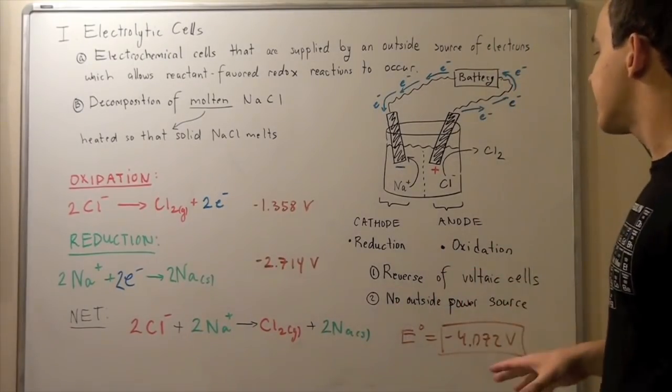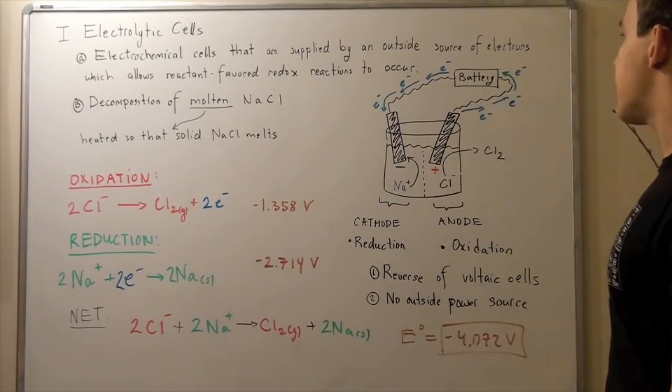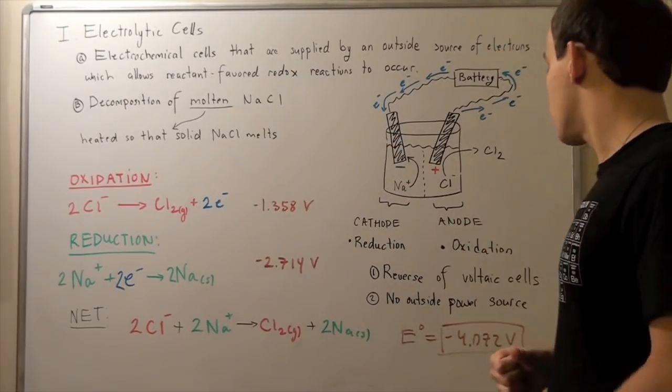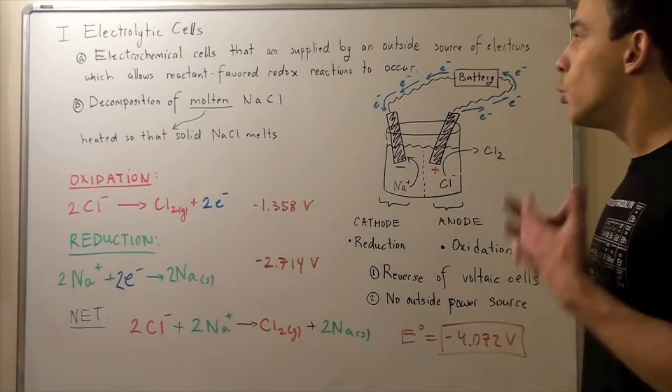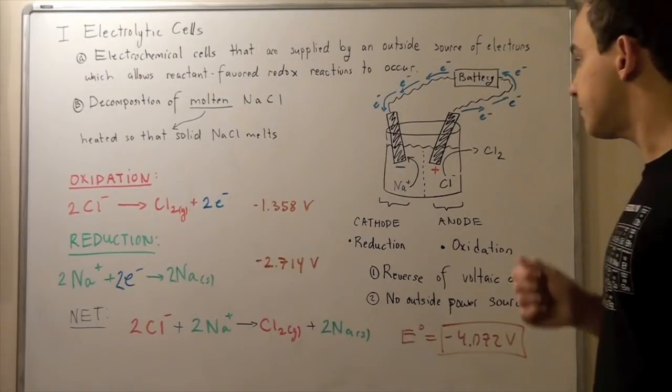Another important difference, obviously, is the fact that in electrolytic cells, we have outside battery source. We have an outside power source. But in voltaic cells, we don't have it.